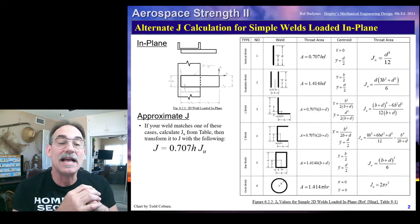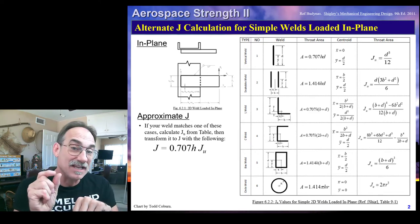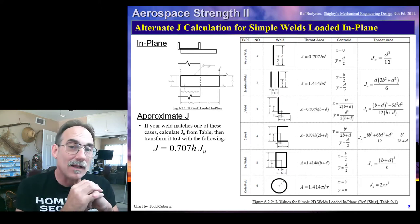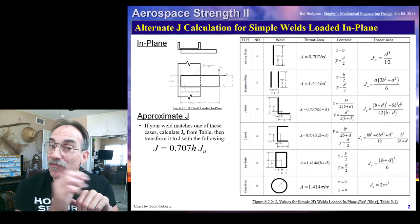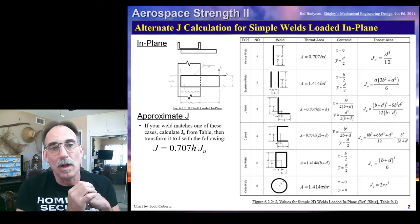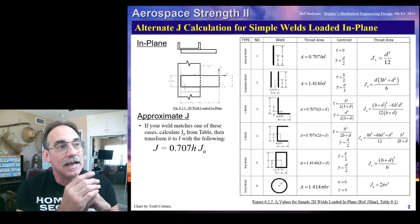A common student mistake is to forget to just use J-U and forget to multiply it by 0.707H. Also, this only applies if all welds in the pattern have the same H dimension. This means they're all butt welds, or more commonly, they're all fillet welds with the exact same throat area of the weld.